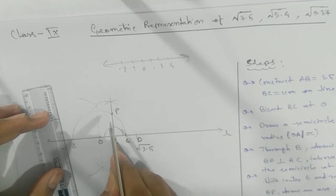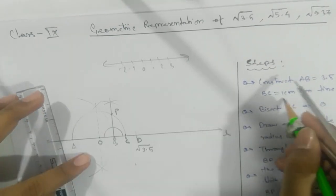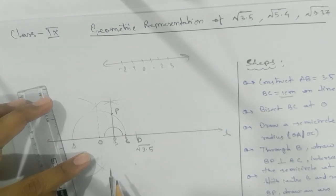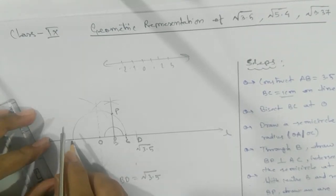So BD = √3.5. Remember, A is not your 0. O is not your starting point...